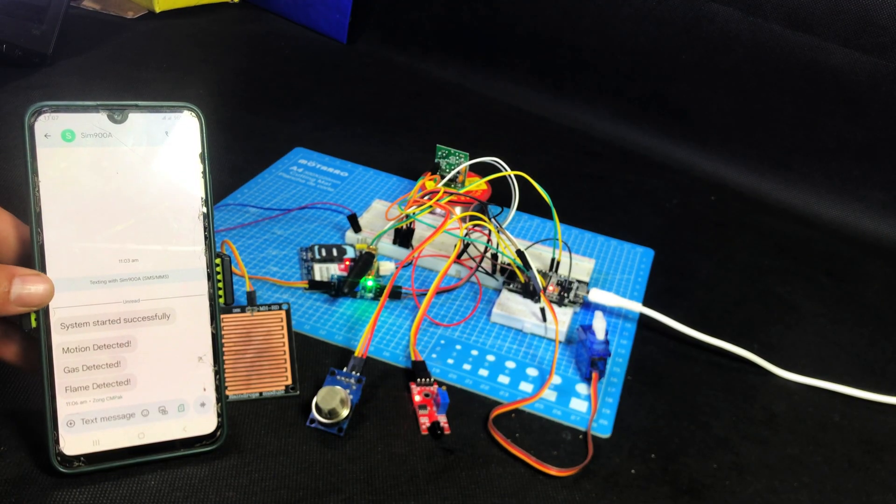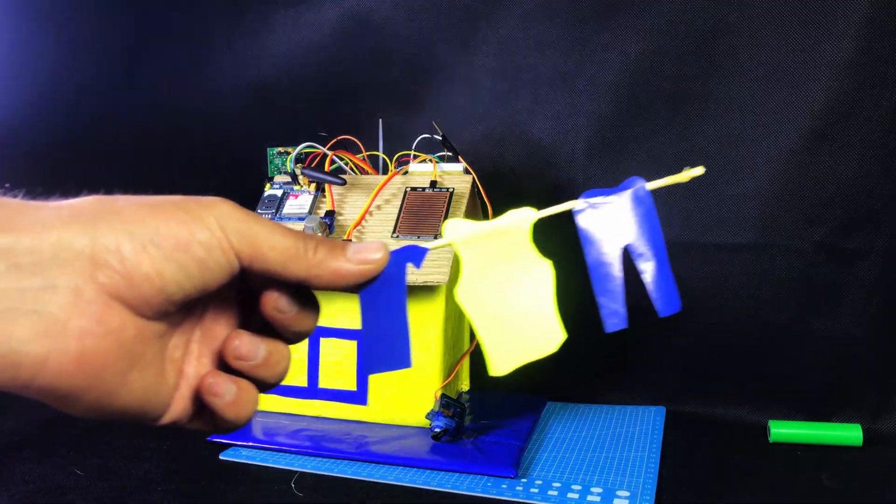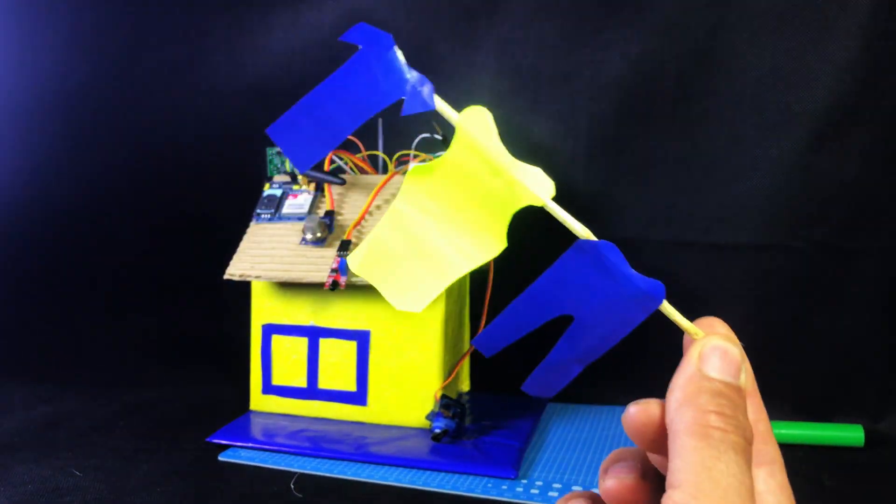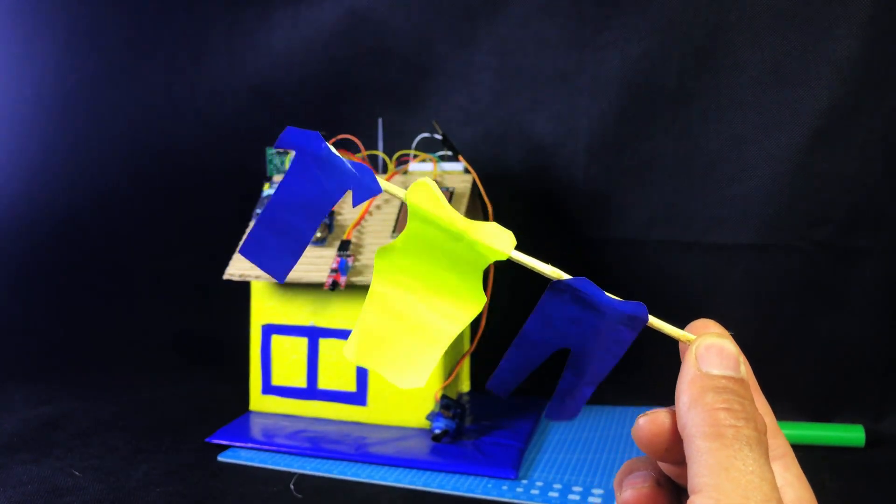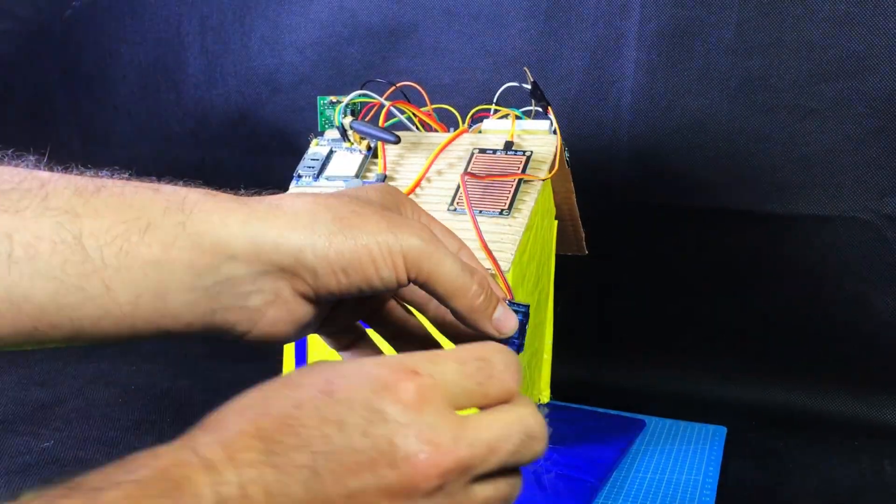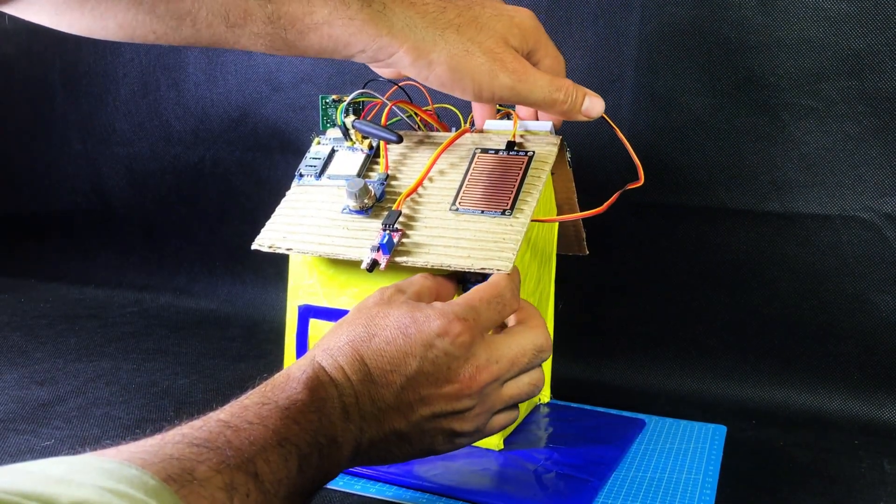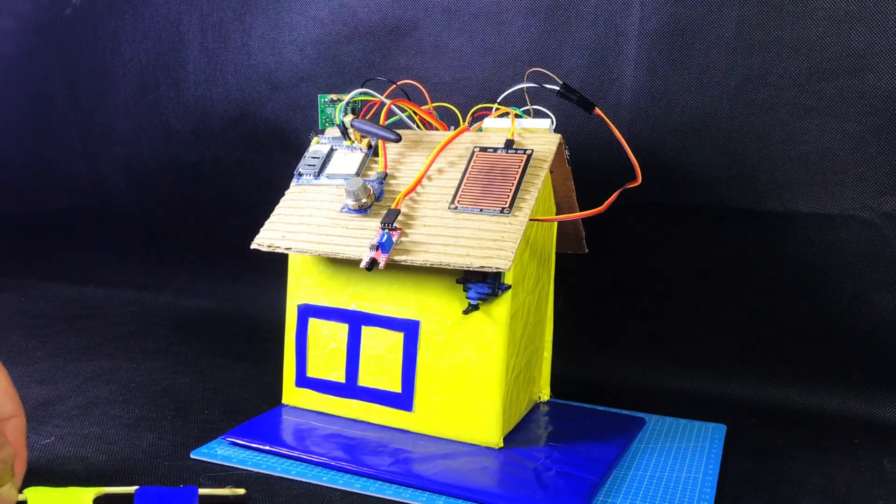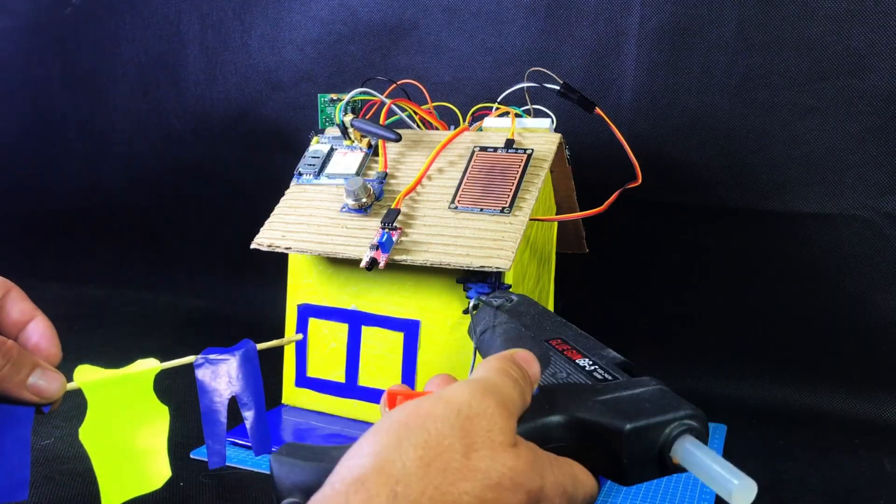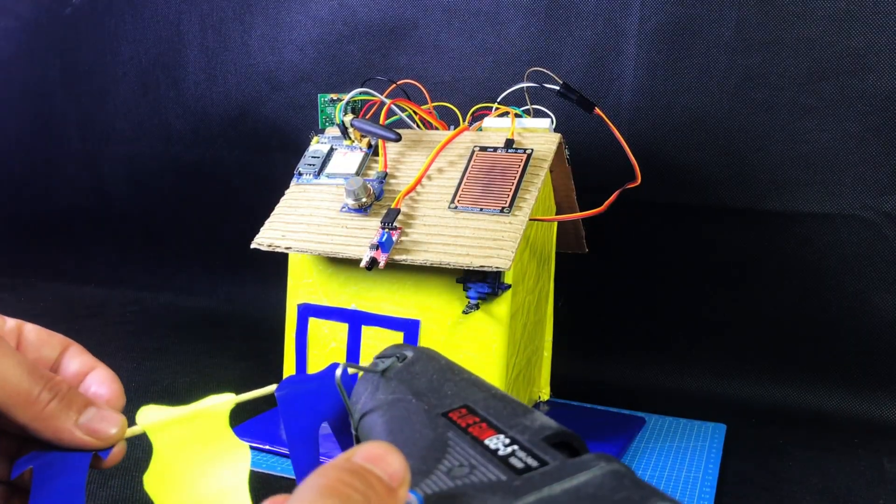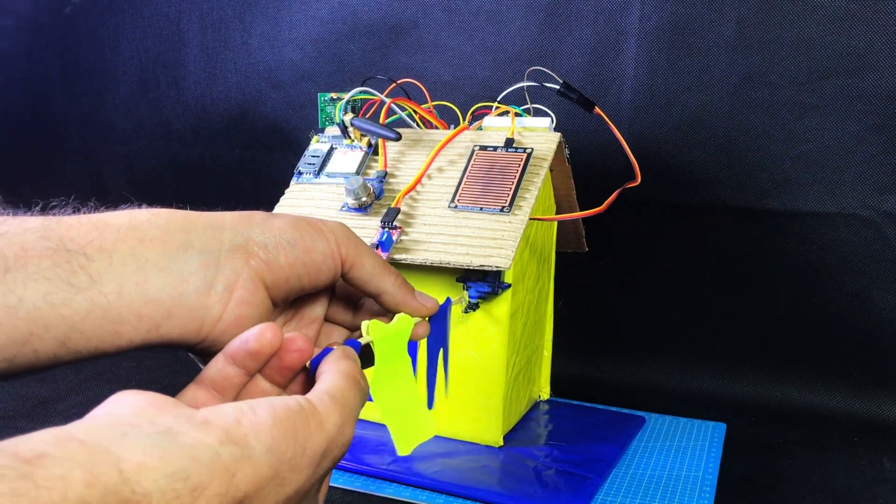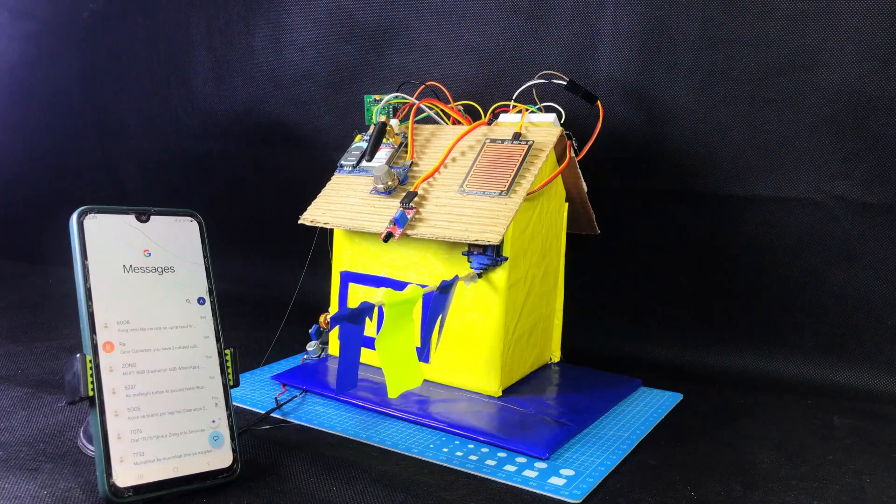Now we'll fix all the components on the house model permanently. Now look here. I have made a small piece of cloth and attached it to a stick just like we hang cloth to dry. First, I will fix the servo motor on this wall using glue. Then, I will stick this cloth stick onto the servo motor arm also using glue. So what will happen? As soon as the rain sensor detects rain, the servo motor will move, and this stick with cloth will also move to a safe side, just like we protect clothes from rain.